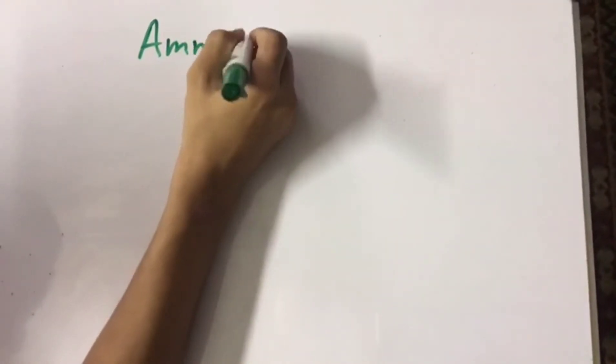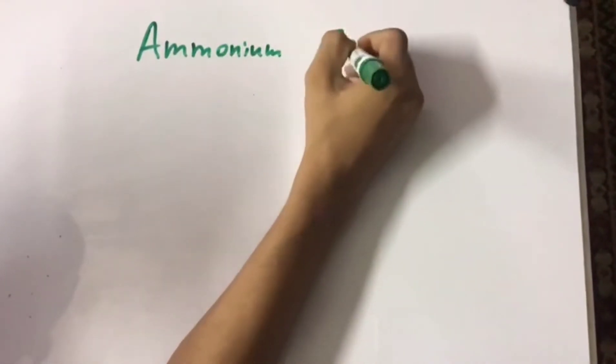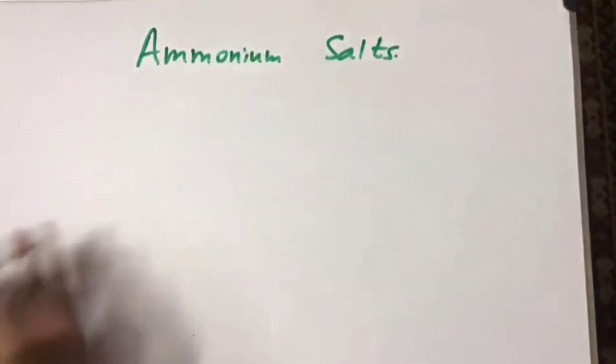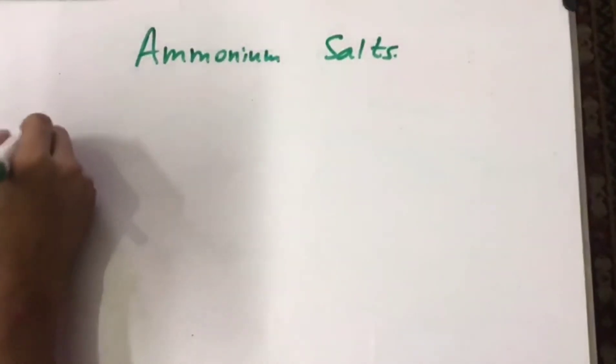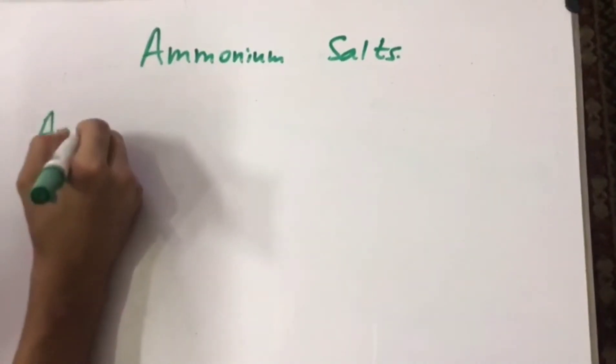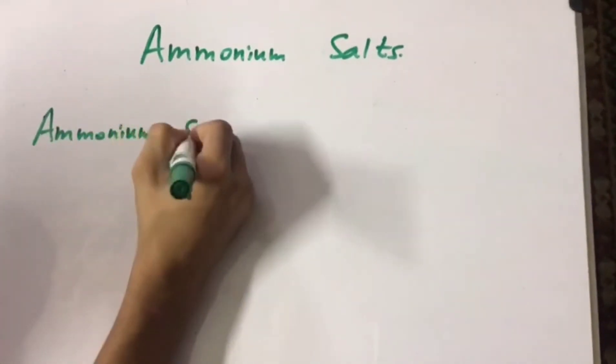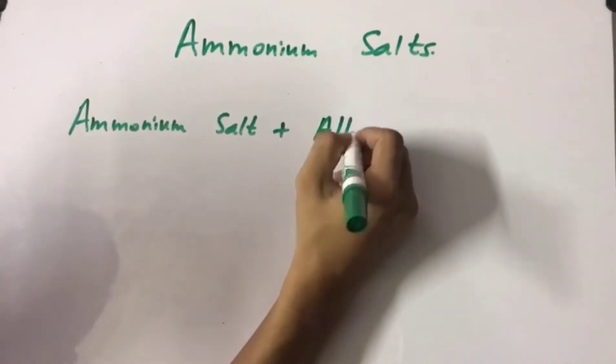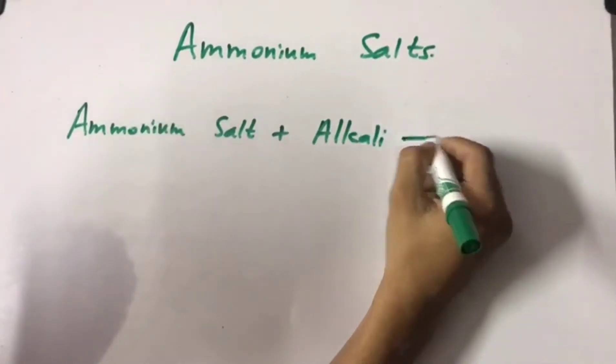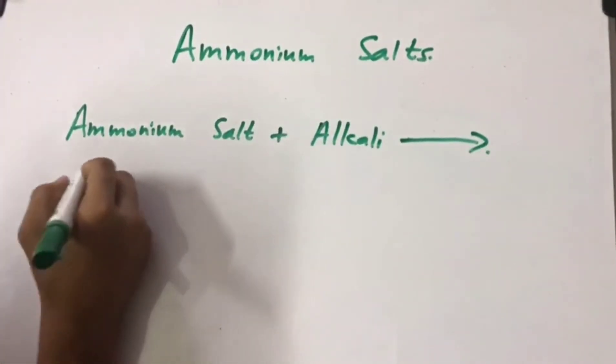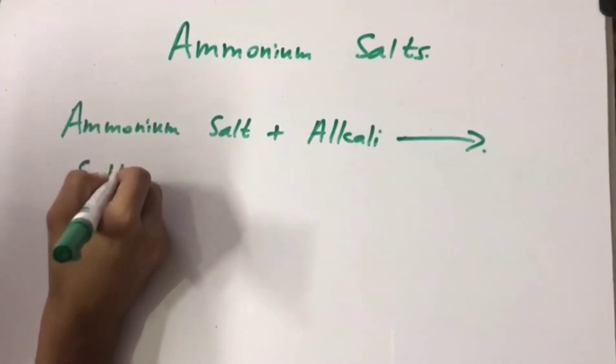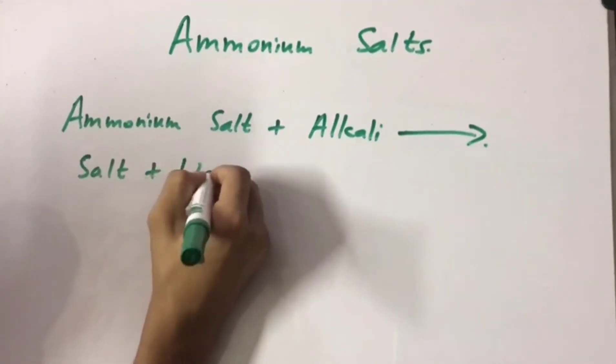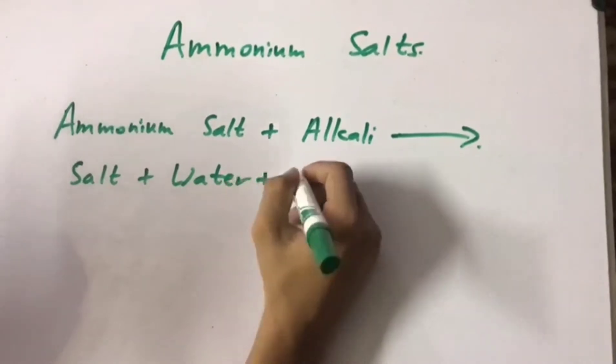Now, about ammonium salts, there is one reaction that we have to learn. The reaction is that an ammonium salt plus an alkali produce a salt plus water plus ammonia gas.